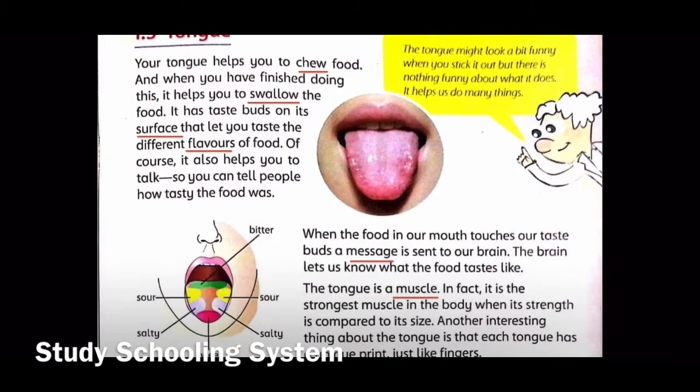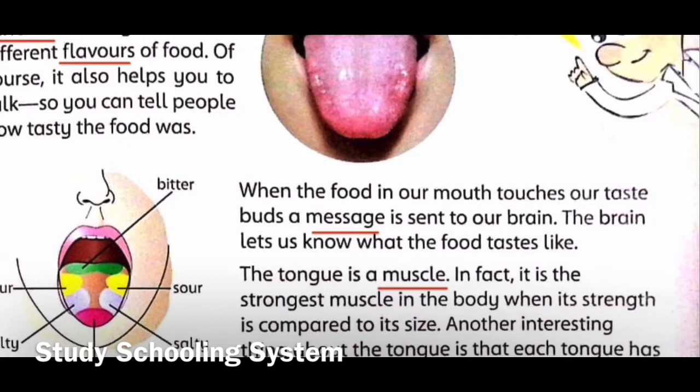It is a sense organ. When the food in our mouth reaches our taste buds, a message is sent to our brain. The brain lets us know what the food tastes like. All of our sense organs send messages to the brain.